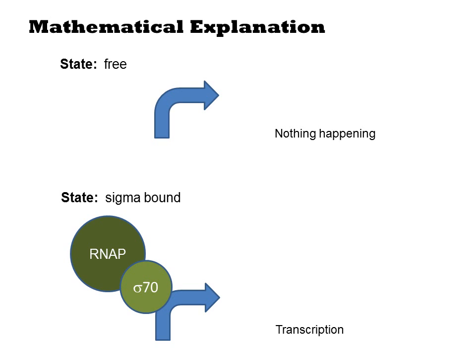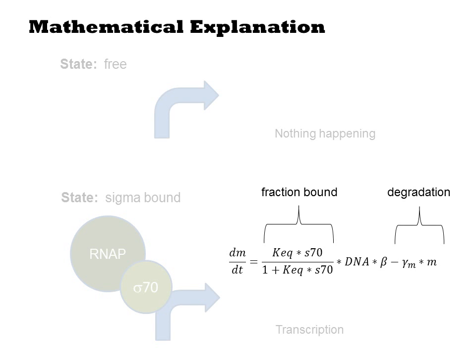I have defined a constitutive promoter as one that only interacts with a sigma factor. Thus that promoter exists in two states in the cell: one that is free and thus inactive, and one that has recruited an RNA polymerase by binding to a sigma factor and is thus active in producing mRNAs at some constant rate beta. I can thus express the rate of transcription as the fraction of DNAs that are in the sigma-bound state multiplied by beta and the number of DNAs present. If I model that as a differential equation, I would also include a degradation term that is proportional to the amount of mRNA in the cell.